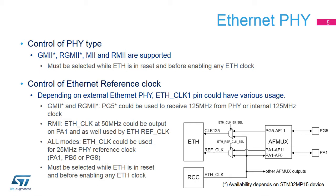The System Configuration Controller allows static configuration of the external Ethernet physical interface used. Supported gigabit physical interfaces are GMII or RGMII with or without 125 MHz from the external physical interface. 10 or 100 Mbit per second MII and RMII physical interfaces are also supported. ETH-CLK from RCC could be used to feed the external physical interface reference clock, usually 25 MHz, thus saving a crystal.